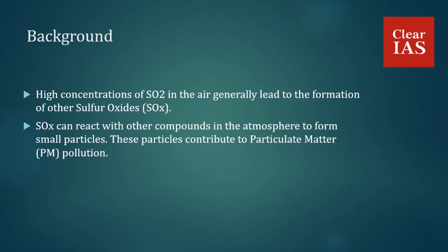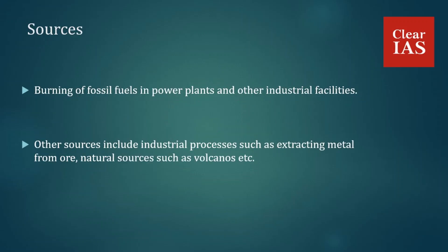Now we'll discuss what are the sources of sulfur dioxide. The greatest source of SO2 in the atmosphere is the burning of fossil fuels in power plants and other industrial facilities. Other sources include industrial processes such as extracting metal from ore, natural sources such as volcanoes, and locomotives, ships, and other vehicles and heavy equipment that burn fuel with high sulfur content.